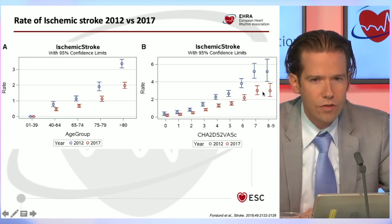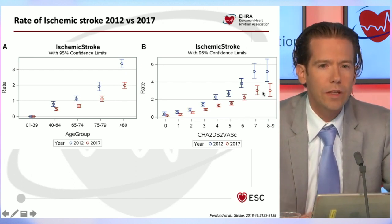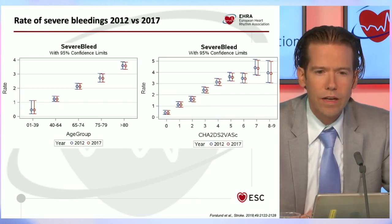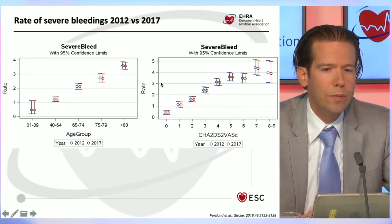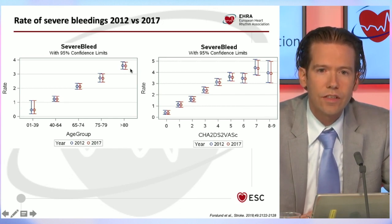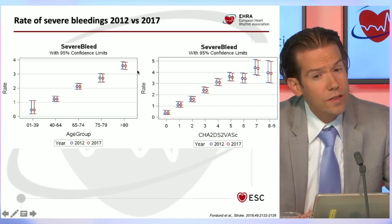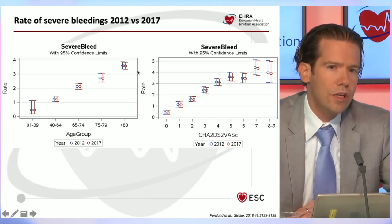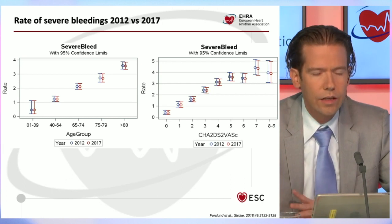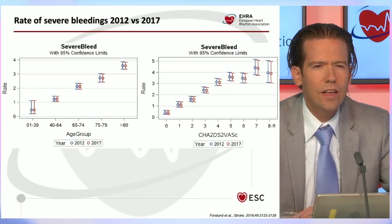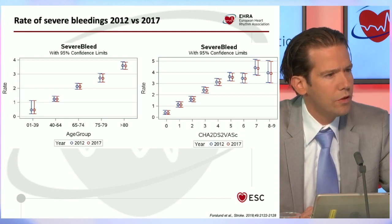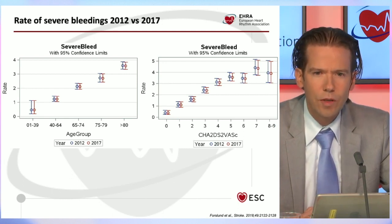One might ask: what's the price we pay? How much more bleeding do we see? Interestingly, the rate of severe bleedings was essentially the same in 2012 and 2017. These are registry data with limitations like residual confounding and coding issues, but the data really go in a very interesting direction — what we've been doing over these years seems to be paying off. And the uptake of NOACs was across all age categories, particularly in the elderly, and also in high-risk patients with high CHADS-VASc and high HAS-BLED scores.